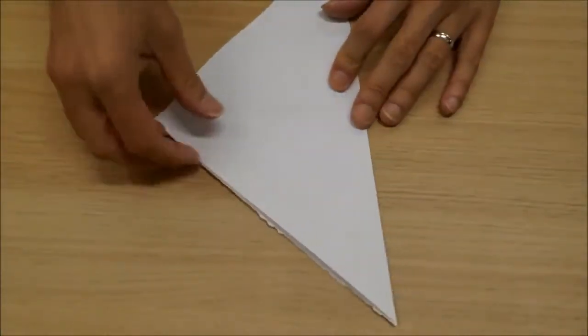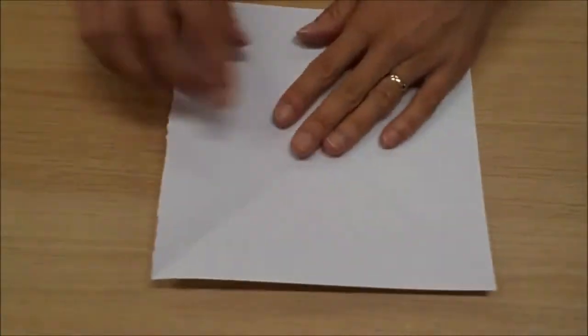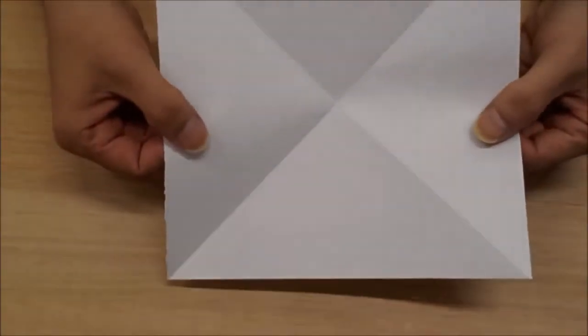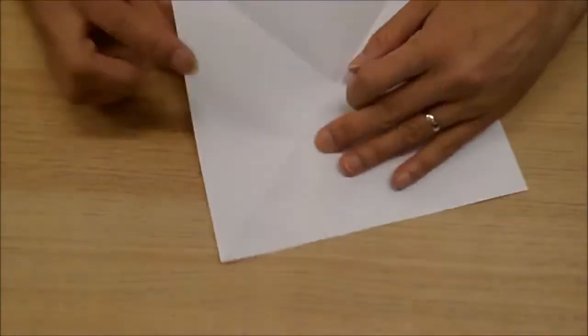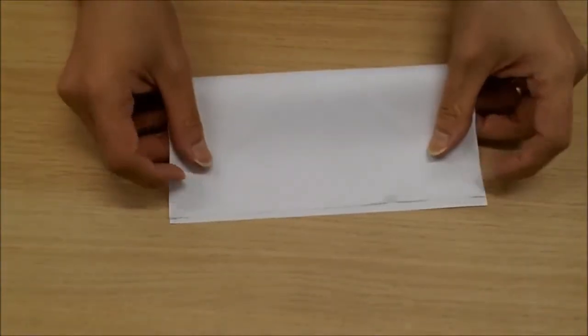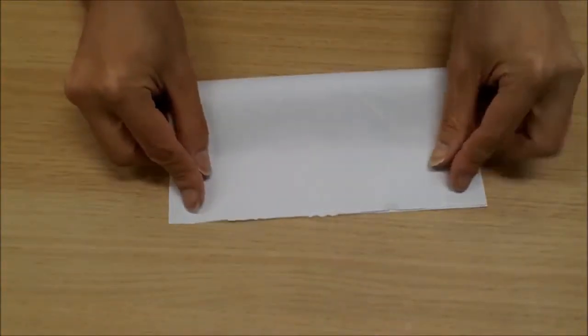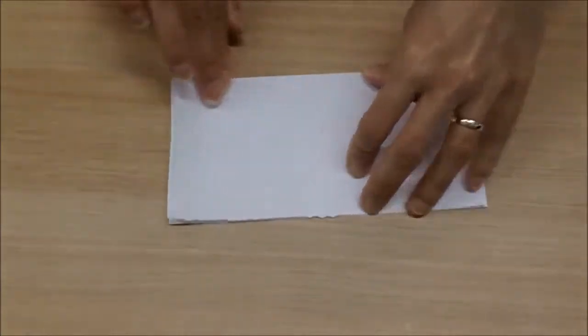We then open it out and form a cross on our sheet like this. We next have to fold the sheet of paper in half non-diagonally to form a rectangle like that.